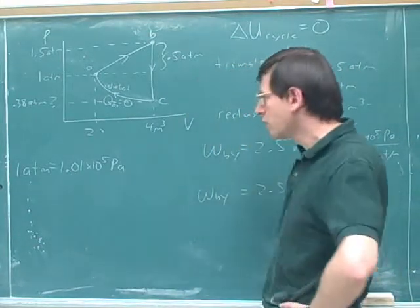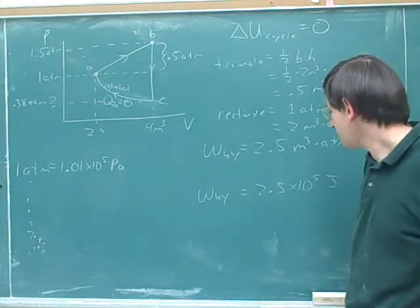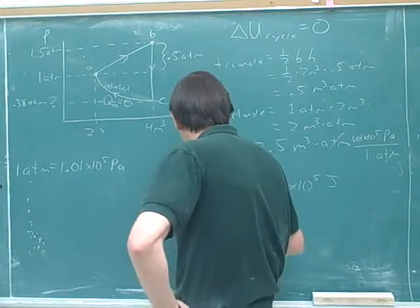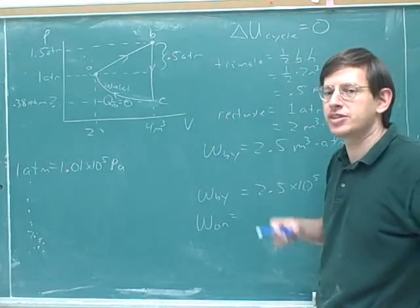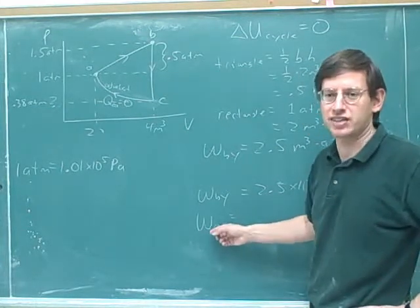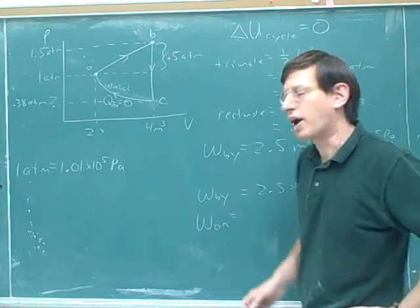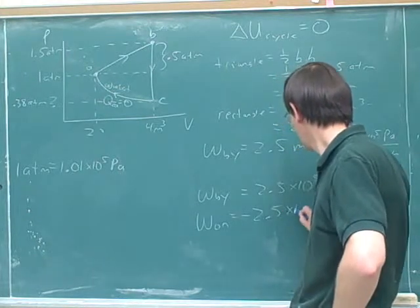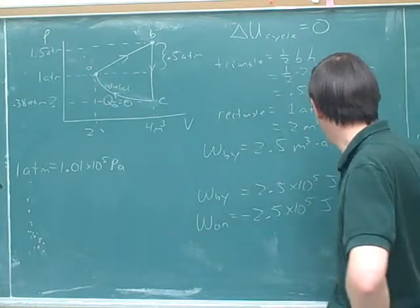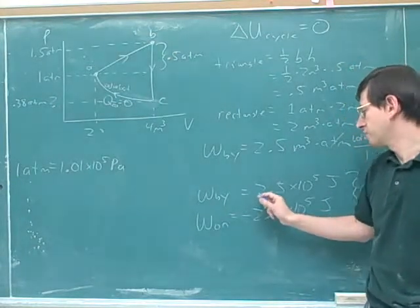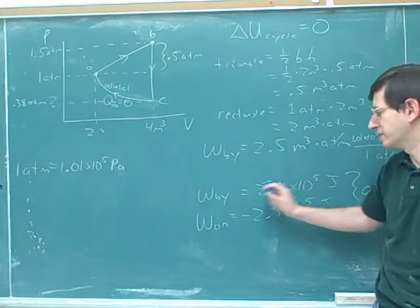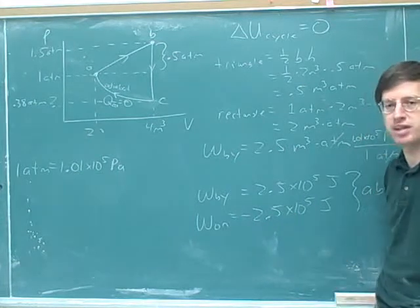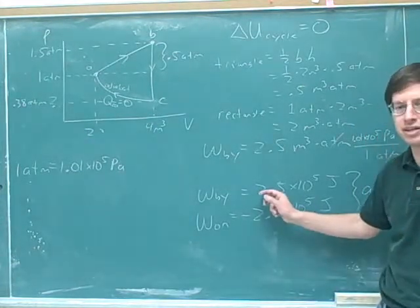So let's say the question was asking us for what is the work done by the gas from A to B. The answer would be positive 2.5 times 10 to the fifth joules. But let's say you asked what was the work that was done on the gas from A to B. A common sense person would say there was no work done on the gas. There was work done by the gas. But a mathematician would say I can say that there was work done on the gas. I would just say it's negative work. We can say that from A to B, the work done by the gas was positive 2.5 times 10 to the fifth joules. That just means that it really was doing work. Or a mathematician would say that the work done on the gas was negative 2.5 times 10 to the fifth joules. That's just a fancy way of saying that work was really being done by the gas.